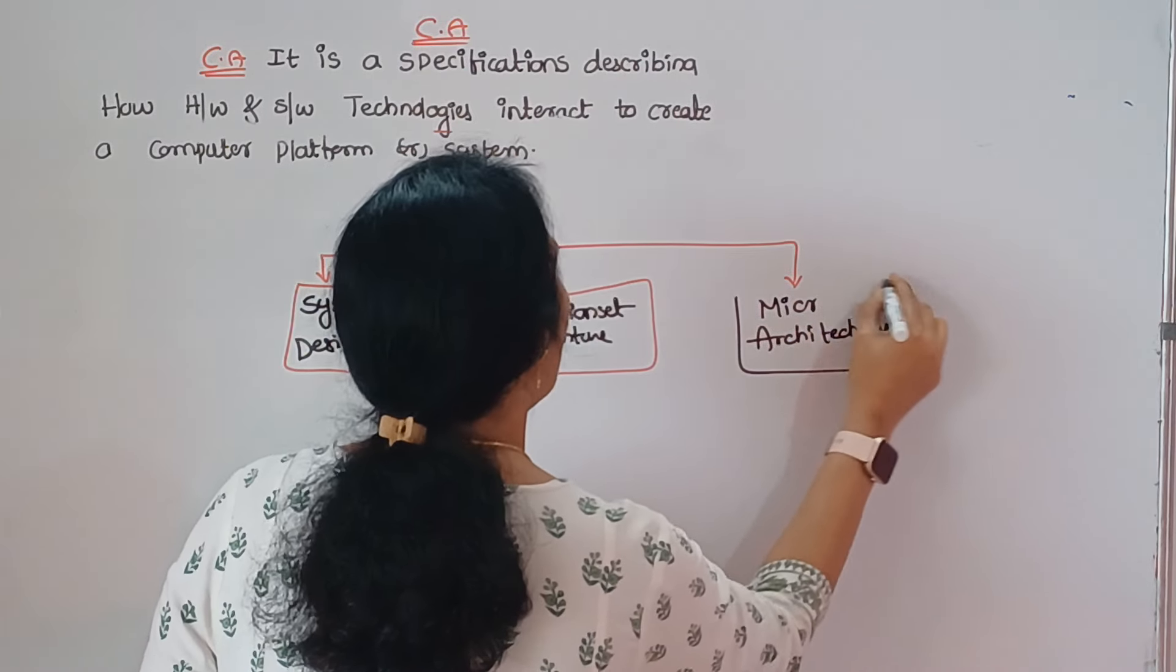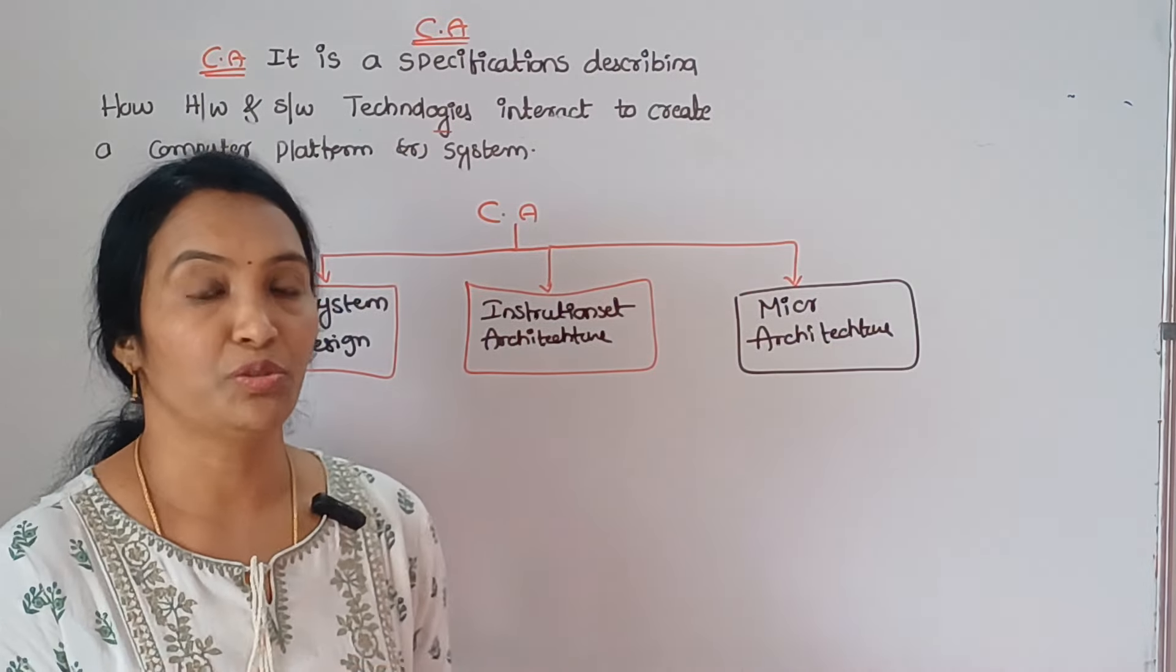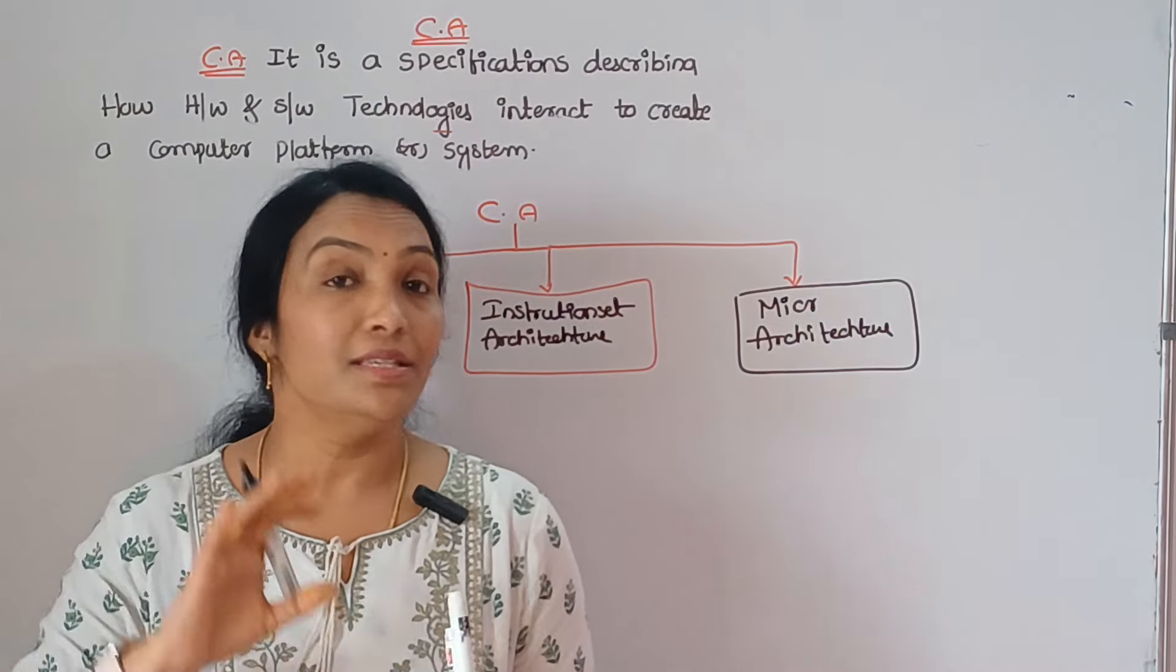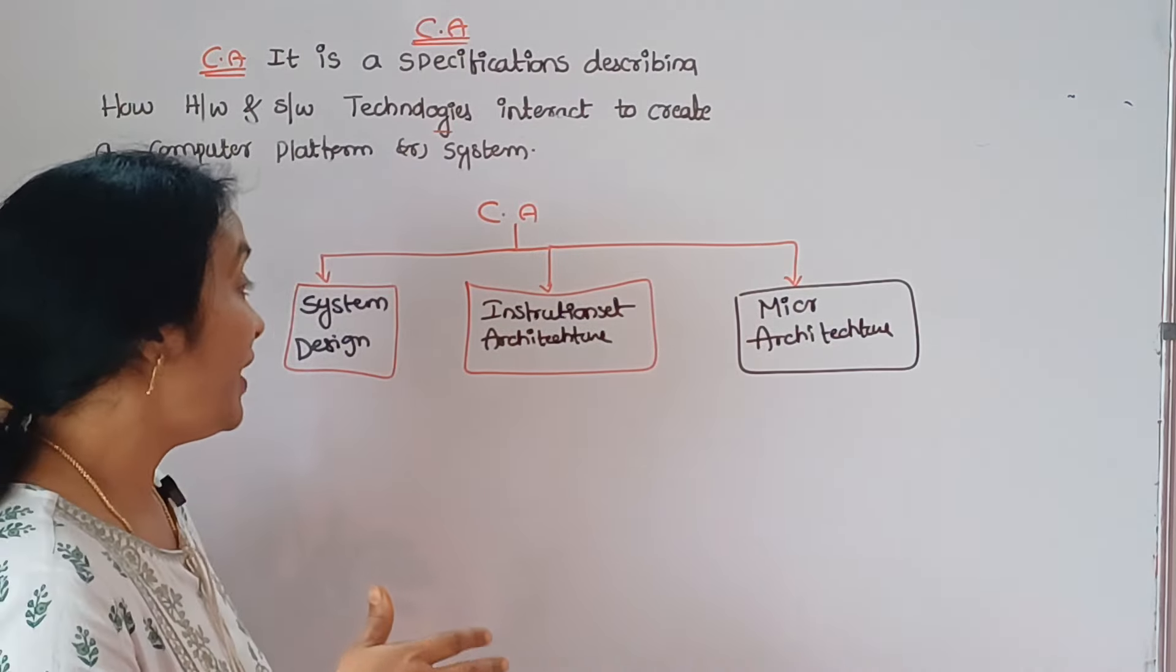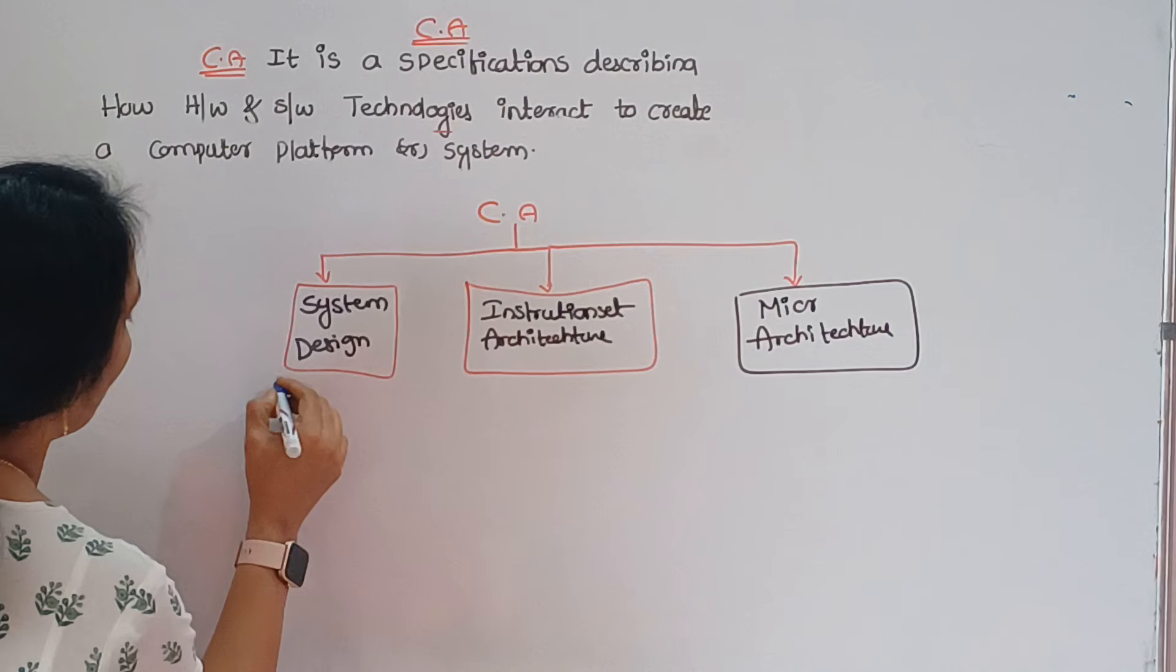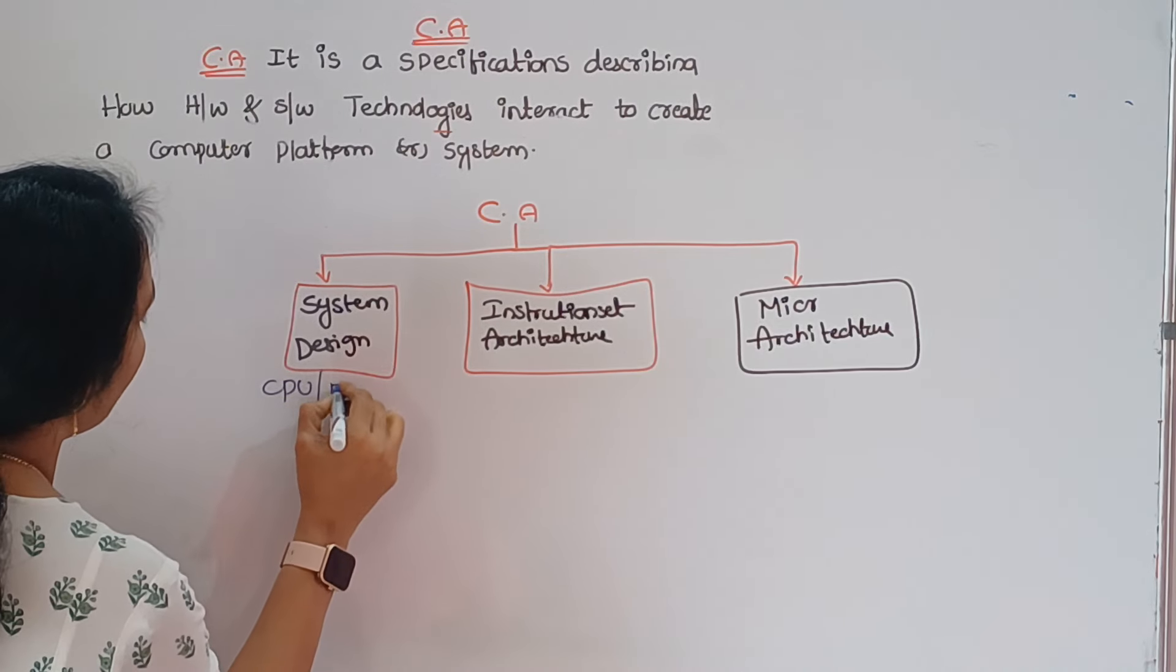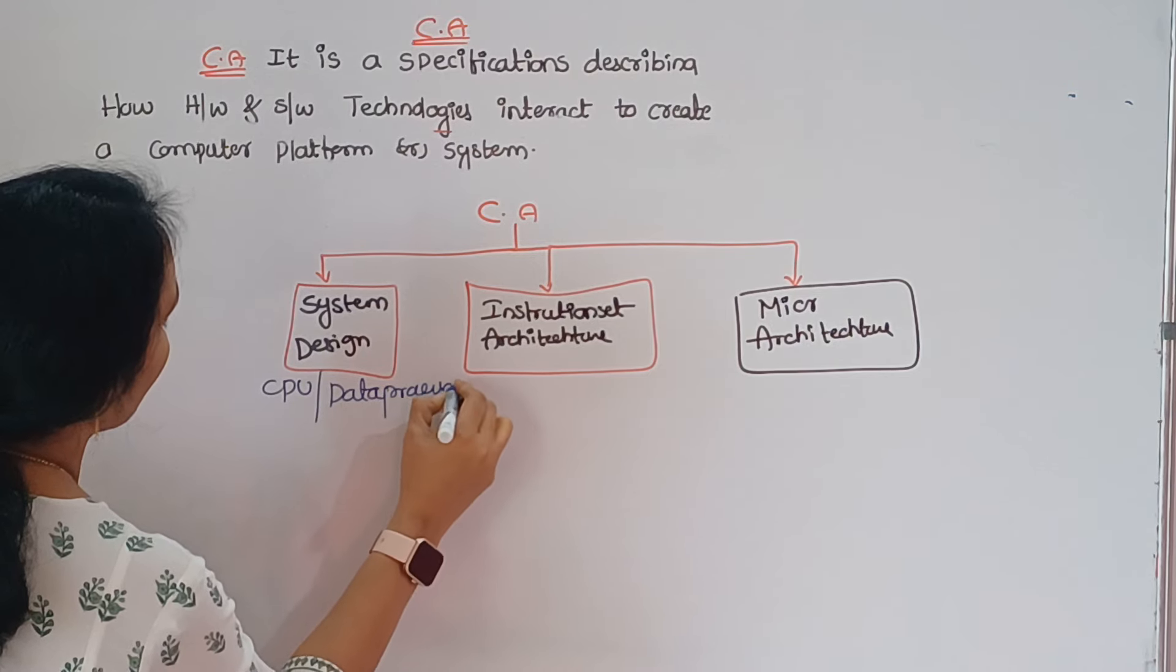First one is System Design Architecture. What is System Design Architecture? This is all about the hardware parts. What is System Design? The hardware parts I call it CPU. Is it visible? Data processors.